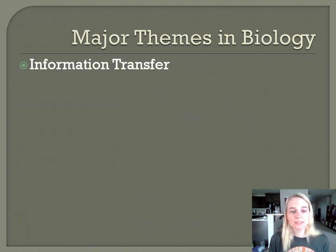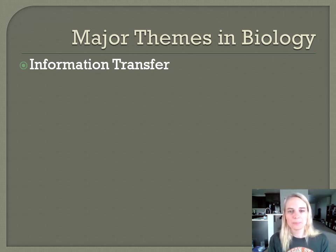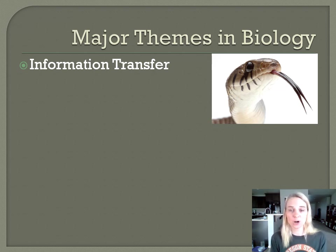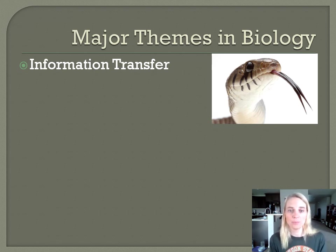A couple of themes on the next slide are information transfer and energy use. For information transfer, a brief example is a snake with its tongue sticking out — that's how snakes pick up information in their environment, taking in chemical odor molecules, analyzing those, and making decisions based on them. So information transfer can be at the chemical level, and I'll give more examples of larger-scale information transfer on the next slide.